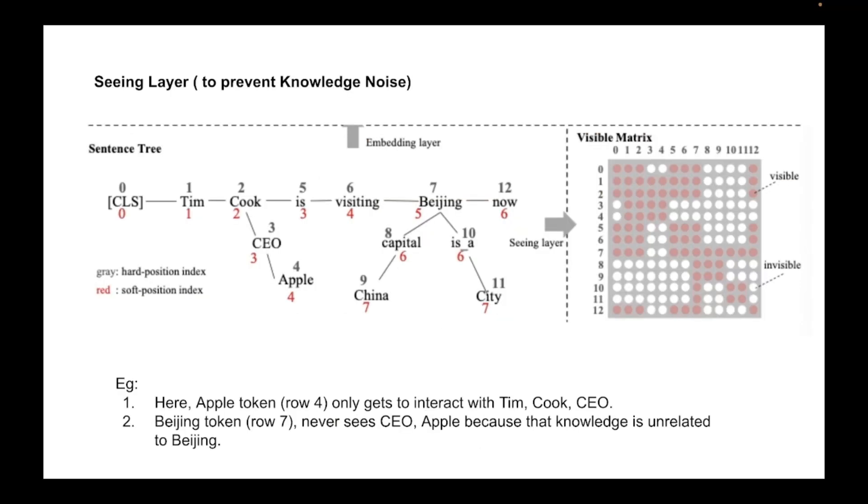So next is the seeing layer which specifies which tokens can interact with each other in the transformer network. So we define this matrix called visible matrix. The rows and the columns correspond to the hard positional indices that represent each token in the sentence and we define which tokens are allowed to see which other tokens. So here if you see Apple token which is the fourth index, row number four is only allowed to see one, two, three and four tokens which is Tim Cook, CEO and Apple.